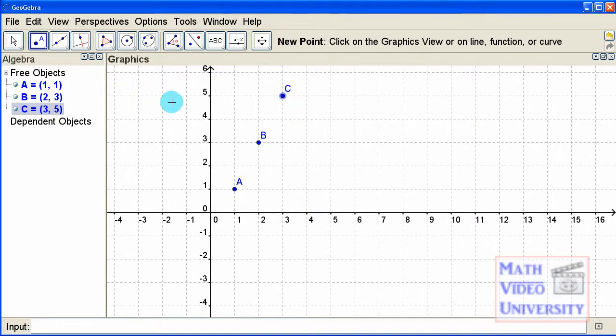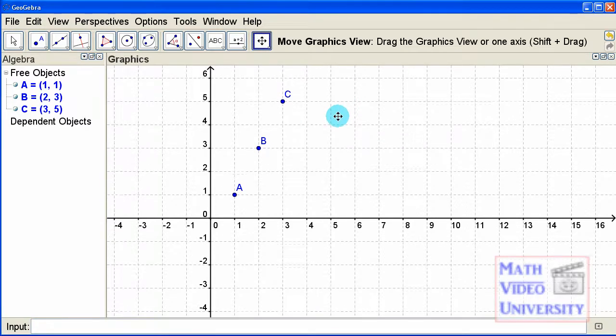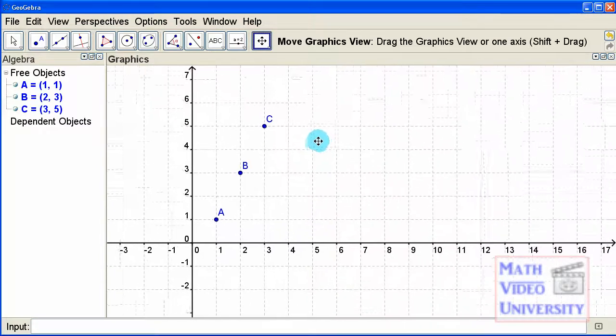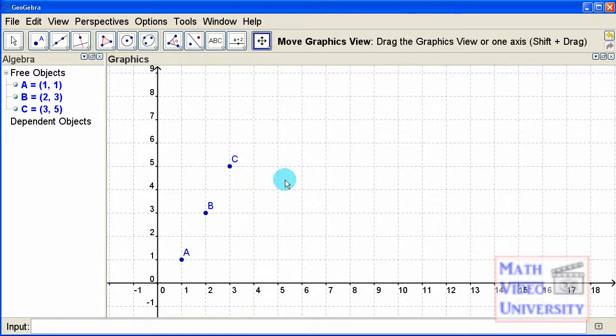Now the problem comes in when I want to go to letter D, it's off the grid, but we can solve that. Come right over here and click this and it says move the graphics view. So I'll come back in here and you see that the cursor changes and I'll click my left mouse button and I can move this anywhere I want. So I'm going to come down here and that will give us enough room to put in point D.